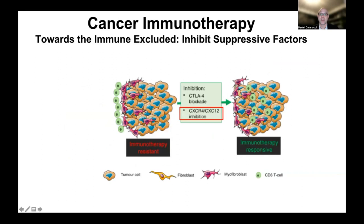Anti-angiogenesis drugs can lead to vessel normalization and allow for better infiltration of cytotoxic T cells into the tumor bed. Other inhibitors of suppressive pathways include CXCR4 inhibitors, a pathway important in preventing tumor infiltration. Inhibitors of this pathway have shown promise in preclinical models and are currently being evaluated in clinical trials.